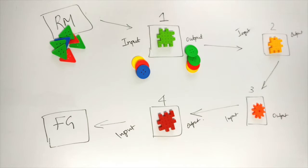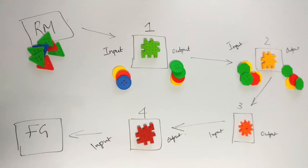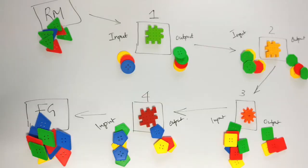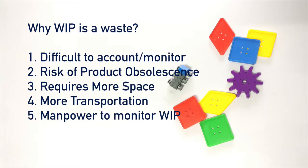At that time, WIP will be built up in the process. We can store it in a bin, then take it to the next station, then run the operation again and store in a bin. In this way there is an input and output. If the company is full of materials, then you can get product obsolescence.